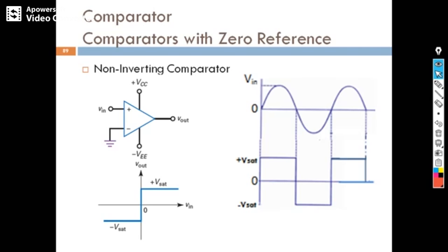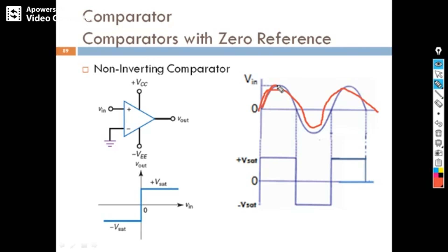You can see here the output of this zero crossing detector. This is the output and this is our input. When the input is greater than zero, the output is plus V-sat. When the input goes in the negative direction, the output is negative V-sat, which saturates negative. Once again, it will saturate positive.